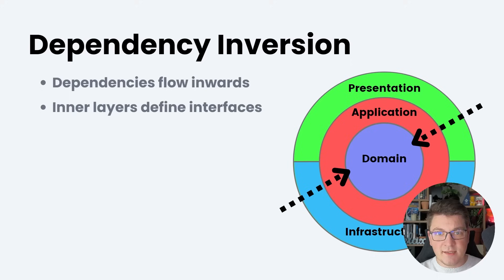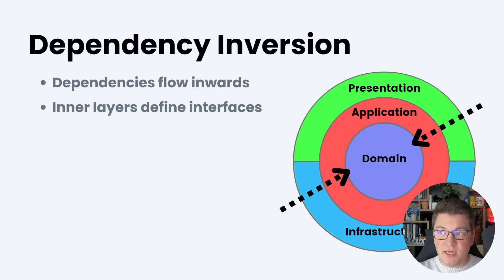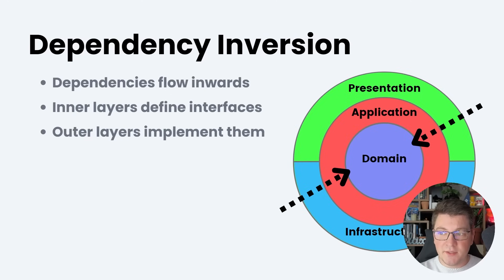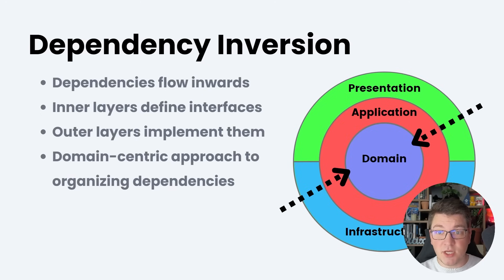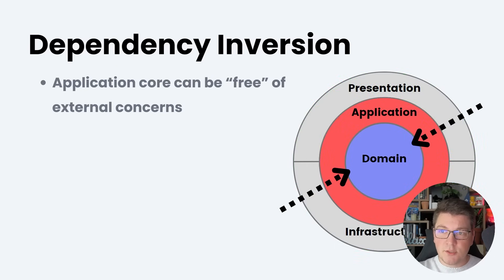What this means in practice: let's say you want to talk to a notification service such as AWS SNS. You will create an abstraction or interface in the application layer, and then use that interface in your use cases to talk with the SNS service. The implementation of this interface is going to live in the outer layer — in this case the infrastructure layer — and we're going to provide the implementation at runtime using dependency injection. Another way to think about the clean architecture is that it's a domain-centric approach to organizing your dependencies. The practical benefit is that it allows your application core to be free of external concerns.